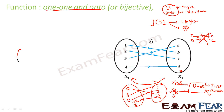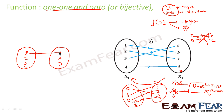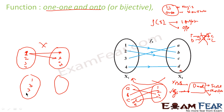You can never have a function where one input maps to multiple outputs. For example, if you have values 1, 2, 3, 4 and outputs A, B, C, D — if input 1 gives output A and also output B, that is not possible. For one number, you will get only one output. However, it is possible for two different inputs to give the same output — for example, both 1 and 2 giving A is allowed. But one input giving multiple outputs is not possible for a function.